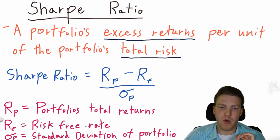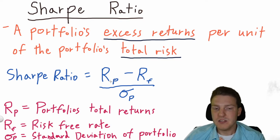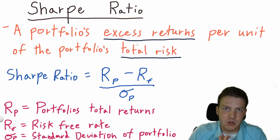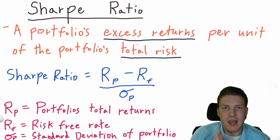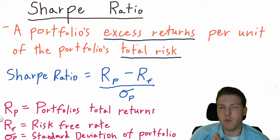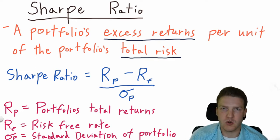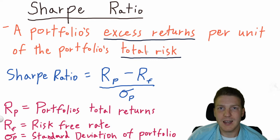On the top we have the portfolio's total returns minus the risk-free rate — that is the excess return. We're talking about the returns we get for investing in this portfolio in excess of the returns we would get if we invested in a risk-free asset, like a U.S. Treasury, for example.